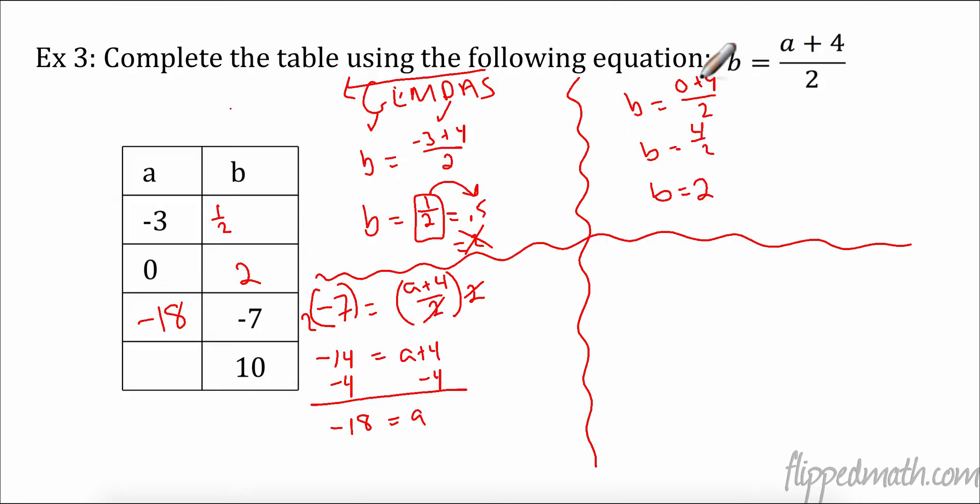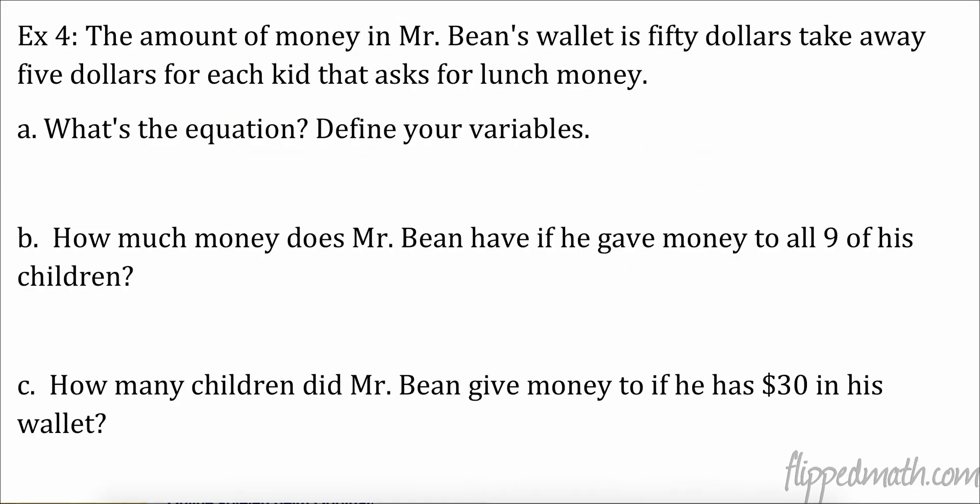Over here now I'm going to plug in 10. So 10 equals A plus four over two. Again, I have grouping and divide. So I have to do the opposite of division, which is multiplication. So now I have 20 equals A plus four because these cancel. The opposite of plus is minus four. So A is going to be 16. And there you have it. Tables. So much fun.